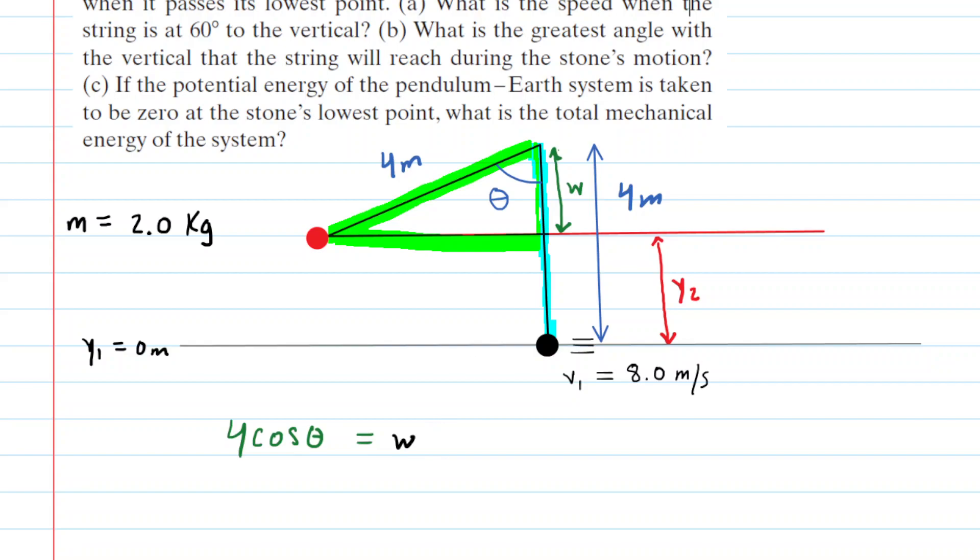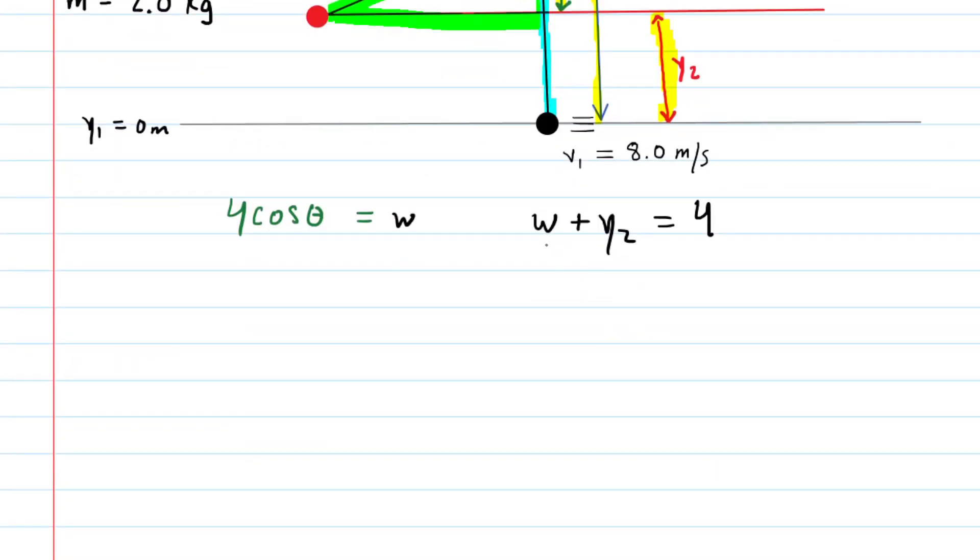So why is that useful? Well, look back at the picture. If you look carefully, you will see that the w plus the y2 would equal the total length of the string. It would equal that 4 meters right here. So let's write a little equation to encapsulate that. We have w plus y2 would equal the total length of the string, which again was 4 meters. Now, we just figured out that w can be expressed as 4 cosine theta. And then if we subtract both sides of this equation by 4 cosine theta, we could see that y2 equals 4 minus 4 cosine theta.